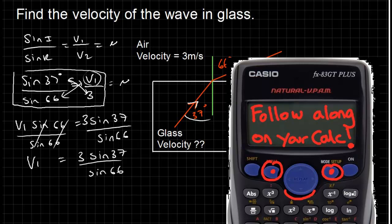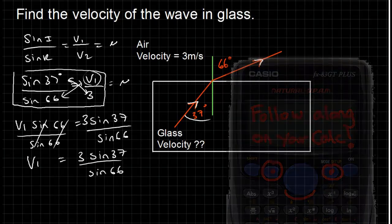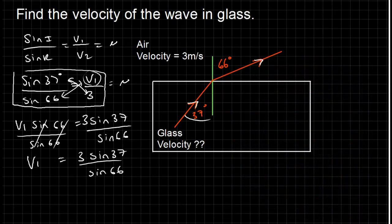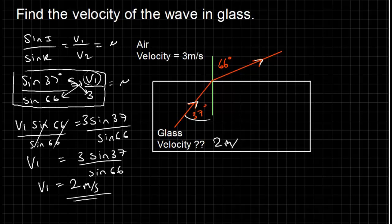We'll check that on the calculator. I get a velocity of 1.97, which I'll round up to 2 meters per second. So this velocity is 2 meters per second. We've seen an example of using the full Snell's Law to find missing numbers.